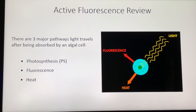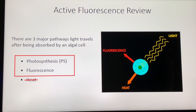There are three major pathways light travels after being absorbed by an algal cell. Light can be used in photosynthesis or expelled as fluorescence or heat. For this review we'll primarily focus on photosynthesis and fluorescence, since active fluorescence is dependent on the amount of fluorescence produced when photosynthesis has stopped.